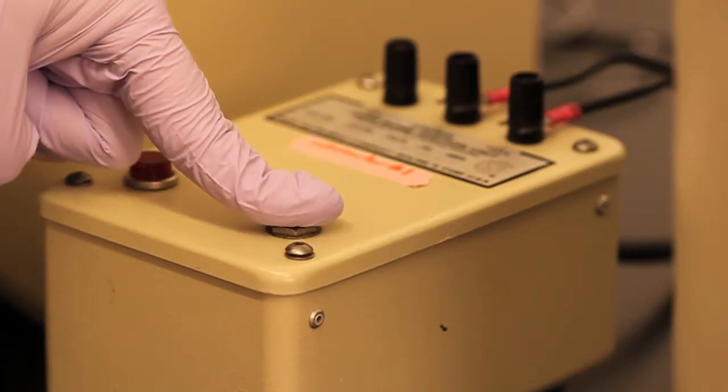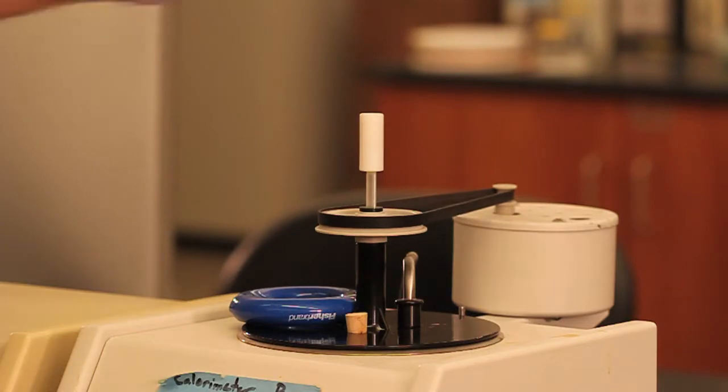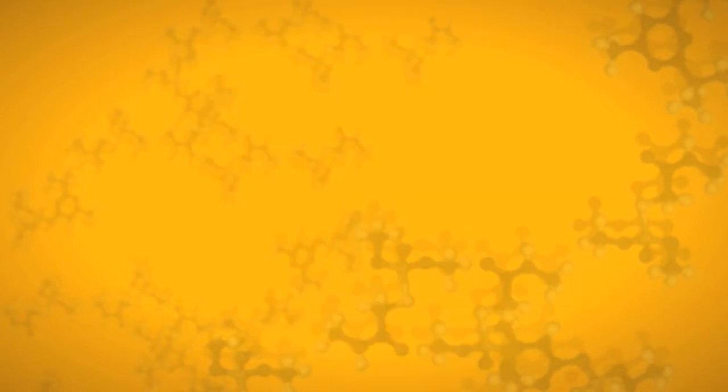For bomb calorimetry, you will press the igniter button. For solution calorimetry, you will depress the rod. See your handout for details on what span you will need for your experiment.